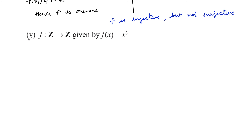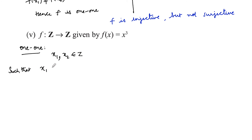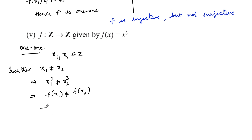Now let's see the fifth one: f from ℤ to ℤ, integers to integers, defined by f(x) = x³. Let's check one-to-one. For x₁, x₂ ∈ ℤ such that x₁ ≠ x₂, their cubes are also not equal. This implies f(x₁) ≠ f(x₂), and hence f is one-to-one.